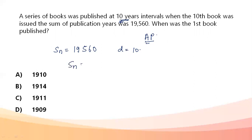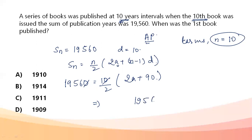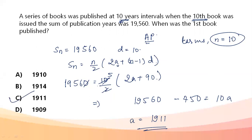Using the sum formula S = N/2 × (2A + (N−1)D), where N = 10 and D = 10: 19560 = 10/2 × (2A + 9 × 10). Solving: 19560 = 5 × (2A + 90), so 2A + 90 = 3912, giving 2A = 3822, and A = 1911. The first book was published in 1911.